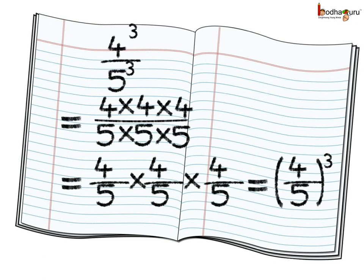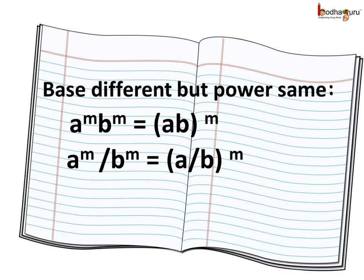So here we are actually multiplying 4 by 5, three times, and we get 4 by 5 multiplied by 4 by 5 multiplied by 4 by 5 — that is 4 by 5 raised to the power 3. So we can say 4 to the power 3 divided by 5 to the power 3 is equal to 4 by 5 raised to the power 3. When bases are different but exponents are same, like a to the power m divided by b to the power m, we bring all the bases under the same parenthesis and the exponent remains the same, giving a divided by b whole raised to power m.